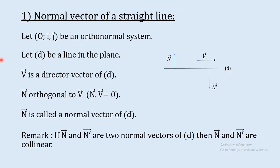The normal vector of a straight line: let Oij be an orthonormal system and let d be a straight line in the plane. V is a director vector of d. n is orthogonal to V, and the scalar product of n and V equals 0. n is called a normal vector of d — that is, the vector orthogonal to a director vector of d. If n and n prime are two normal vectors of the same line, then they are collinear, since they are both orthogonal to the same vector and share the same direction.